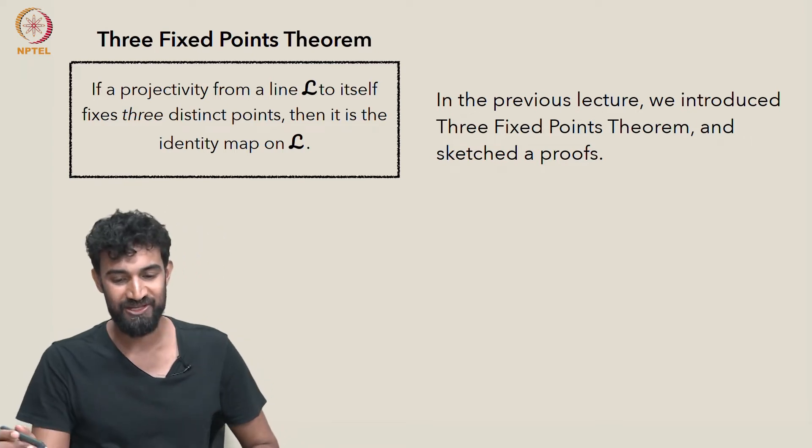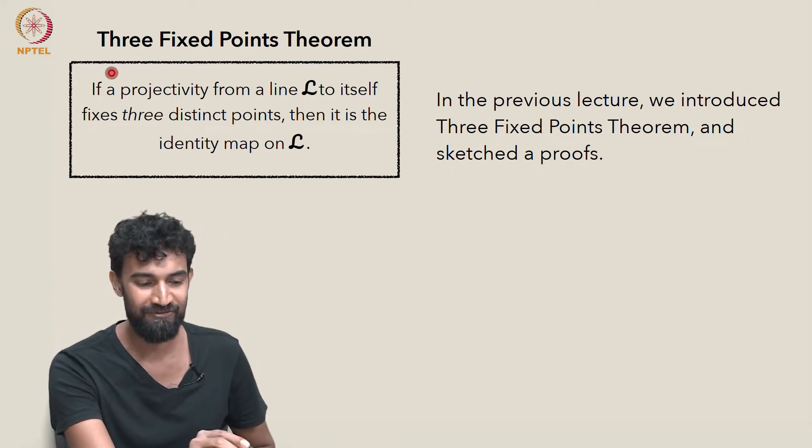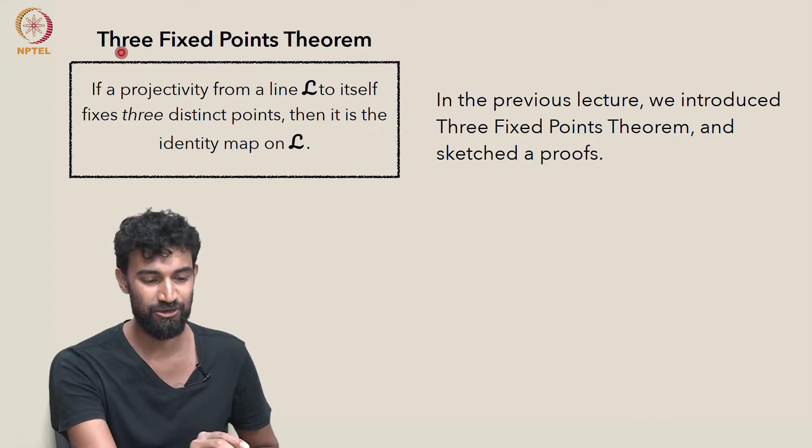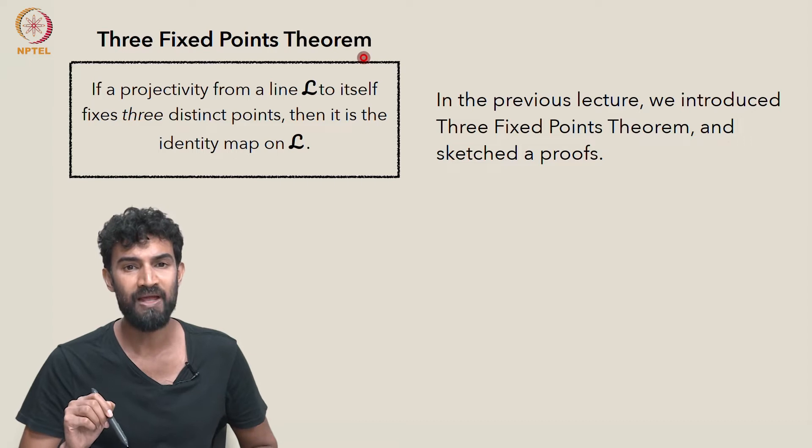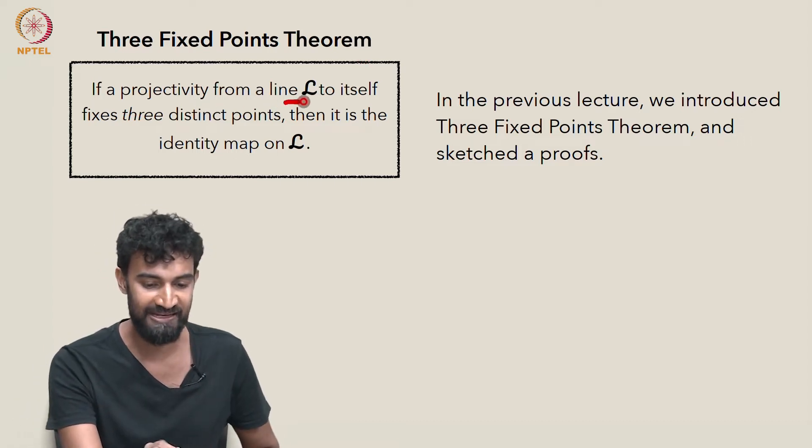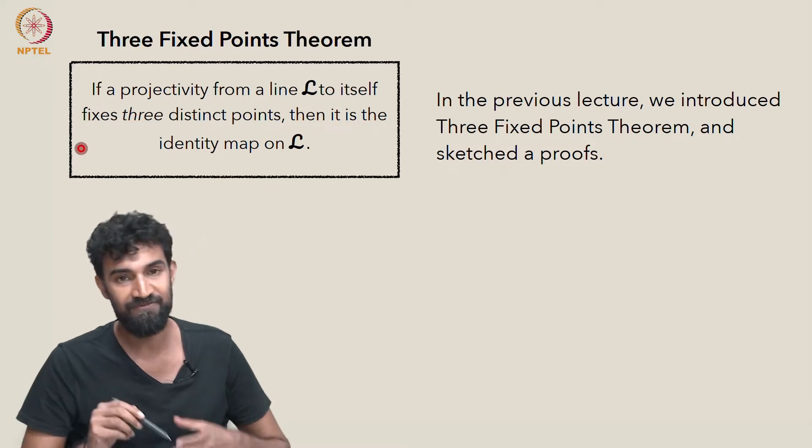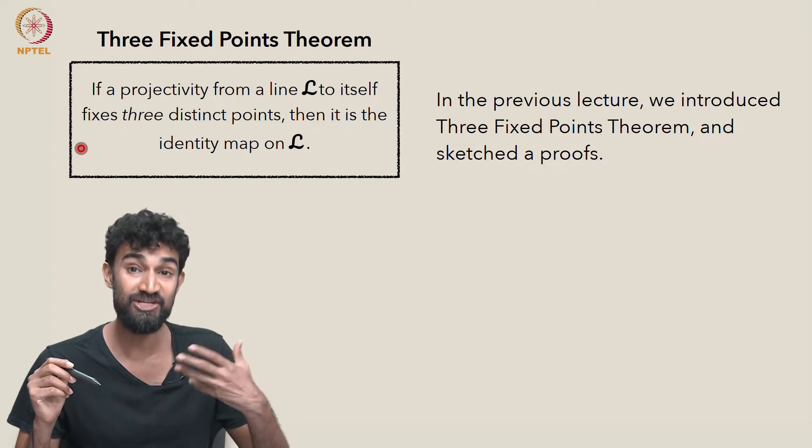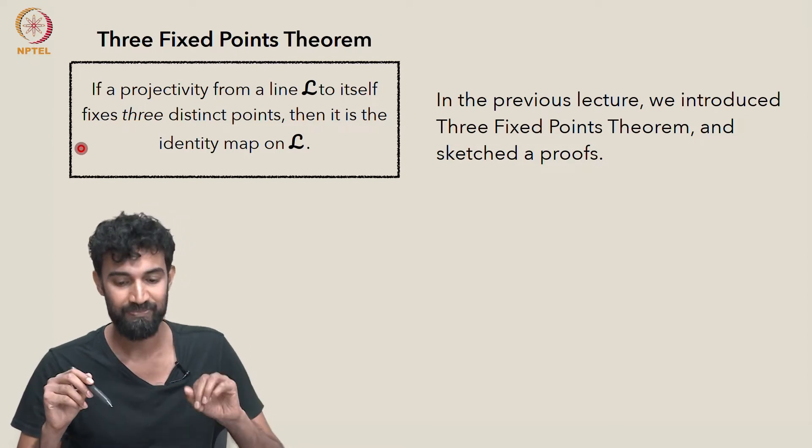But actually, it's going to come out of a theorem we just discussed in the end of the last lecture, known as the three fixed points theorem. That stated that if a projectivity from a line L to itself fixes three distinct points, then it's actually the identity map on L. It fixes every point.